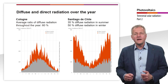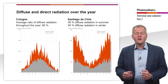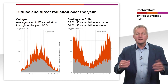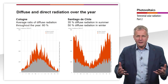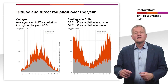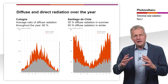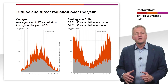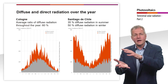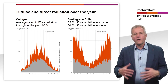The second diagram shows the irradiance for a whole year in Santiago de Chile, which is at a latitude of −33° in the southern hemisphere. The irradiance in summer is much higher than in December or January. The average ratio of diffuse radiation is only 50% in winter and even 35% in summer, which is no surprise as Santiago is in the subtropics — much closer to the equator than Cologne — explaining the higher quantity of direct radiation on a horizontal surface.